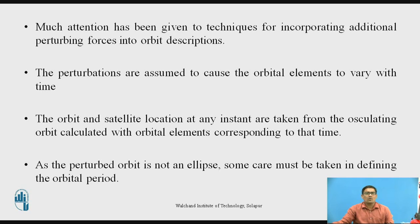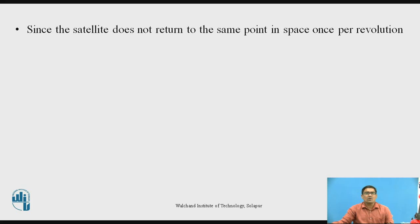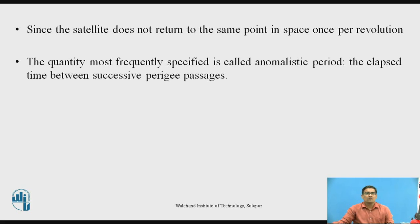Since the perturbed orbit is not an ellipse — whereas the original equations were developed with the assumption that the orbit is an ellipse — some care must be taken in defining the orbital period, since the satellite does not return to the same point in space once per revolution. The quantity most frequently specified is called the anomalistic period, which is defined as the elapsed time between successive perigee passages.